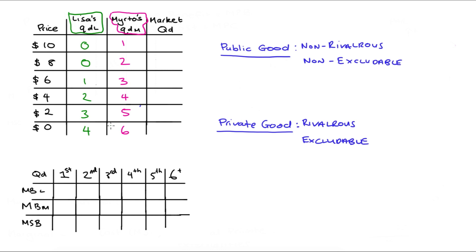The difference between vertical and horizontal summation comes down to the difference between how we treat public goods versus private goods in economic theory. I'm not going to discuss these in detail here. In summary, public goods have two features: they're non-rivalrous and non-excludable. In contrast, private goods are both rivalrous and excludable.